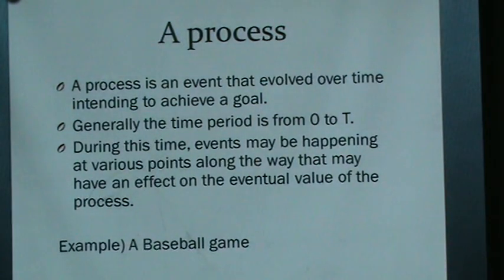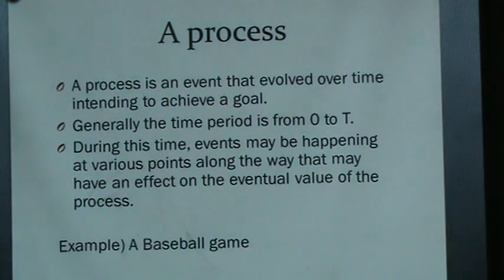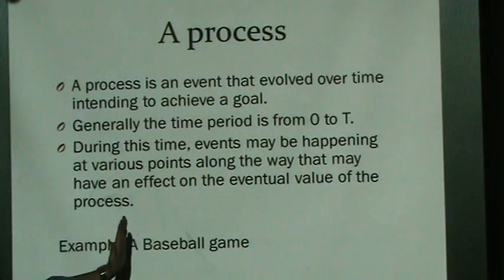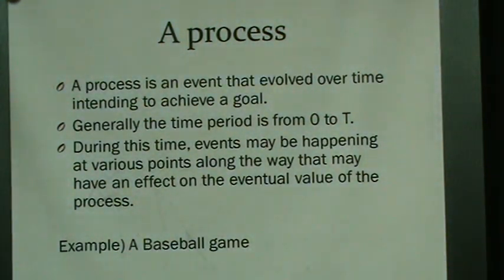During the time, an event may at various points along the way have an effect on the eventual outcome. For example, a baseball game happens over time. The innings are individual events that get added up to complete the process. It's possible that previous scores get added to the current inning's score to get the next score, but a process doesn't have to look at the past. A process is a very vague concept — just something that evolves over time and tries to achieve a goal.